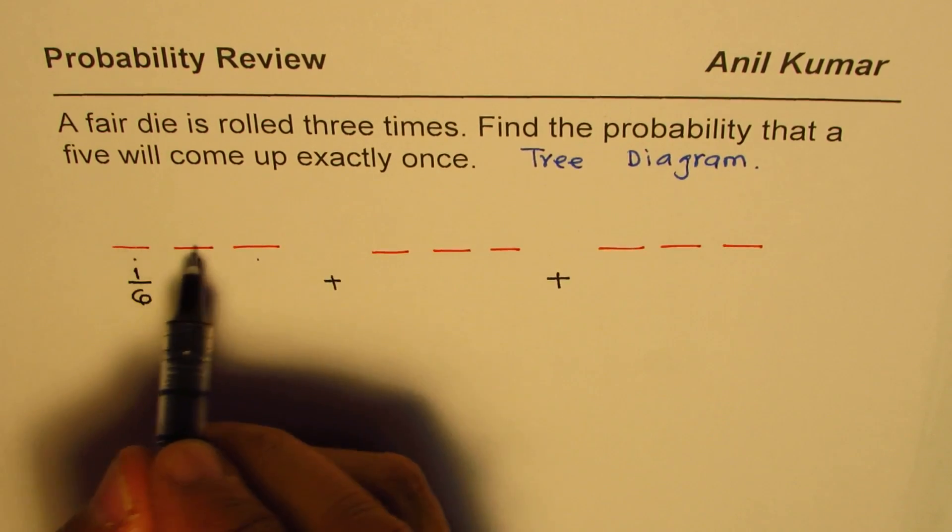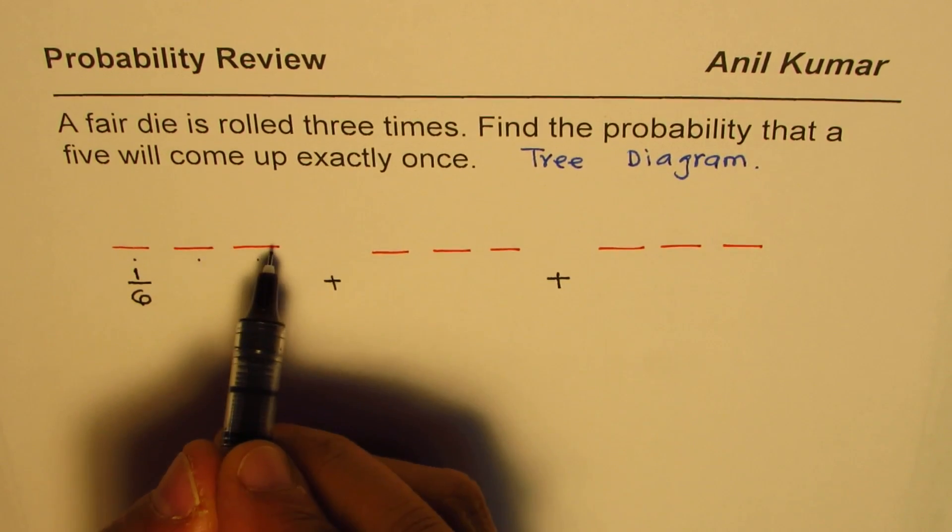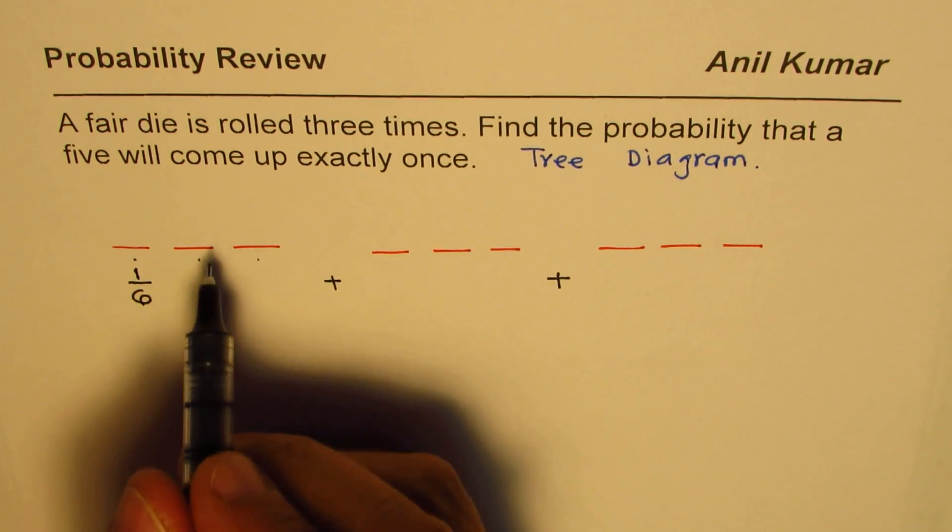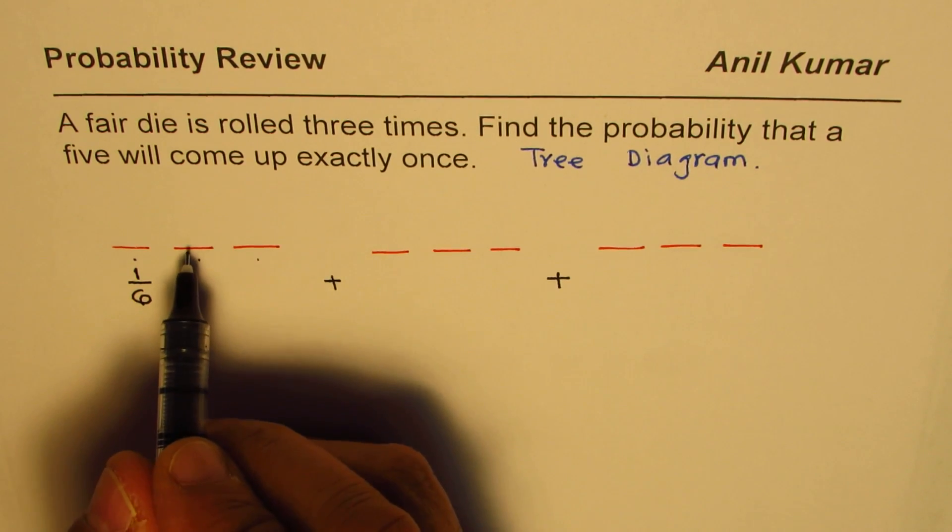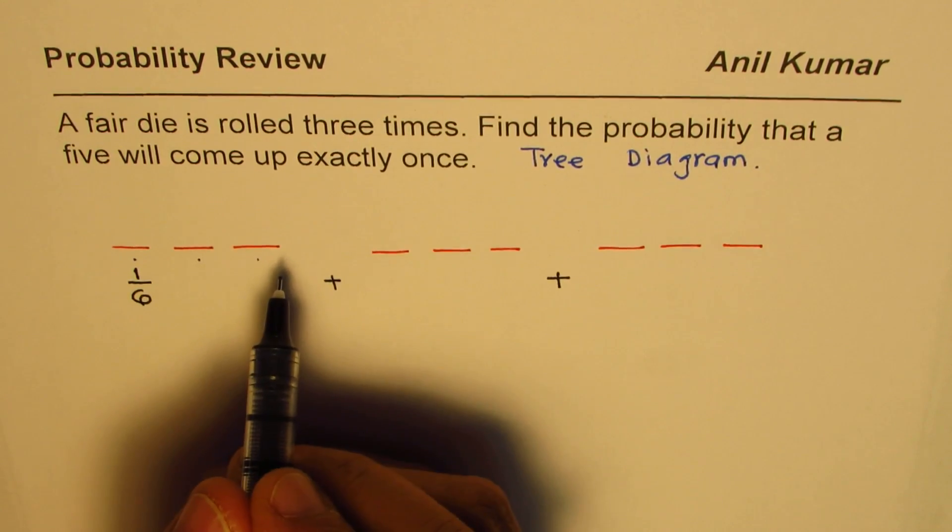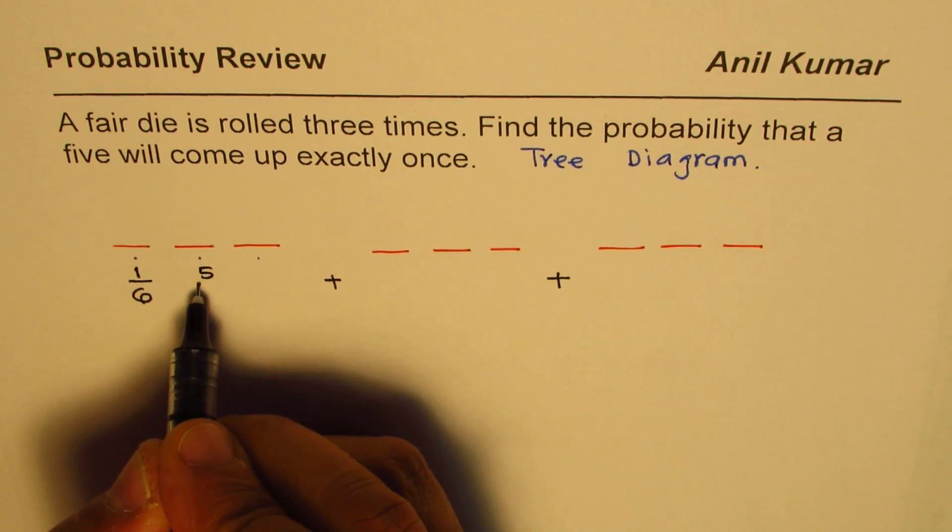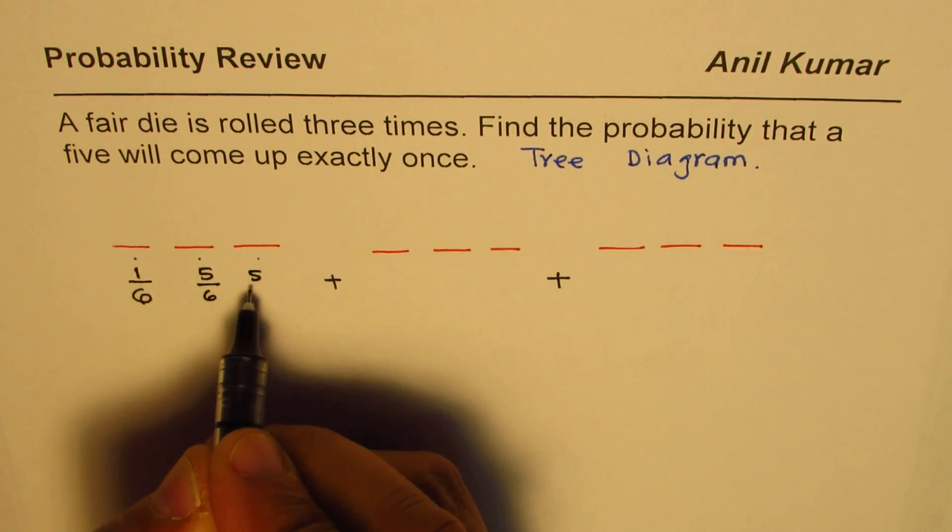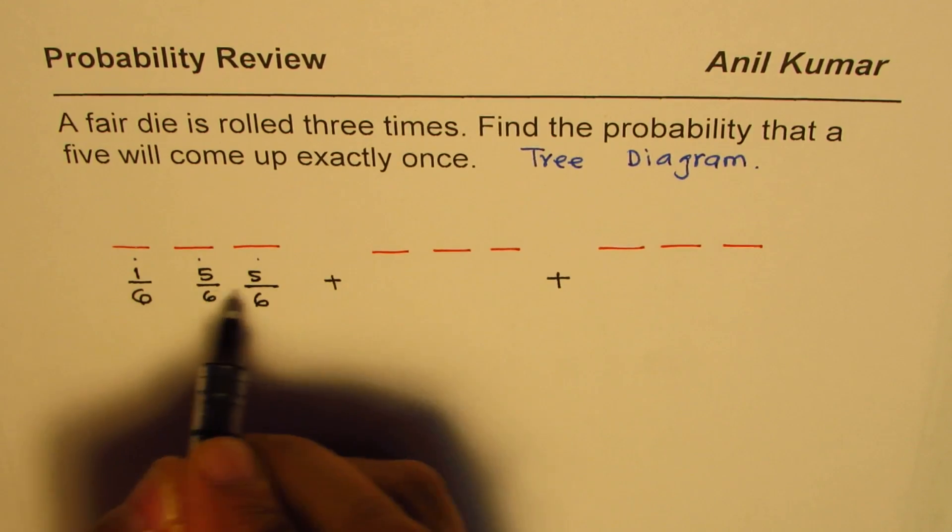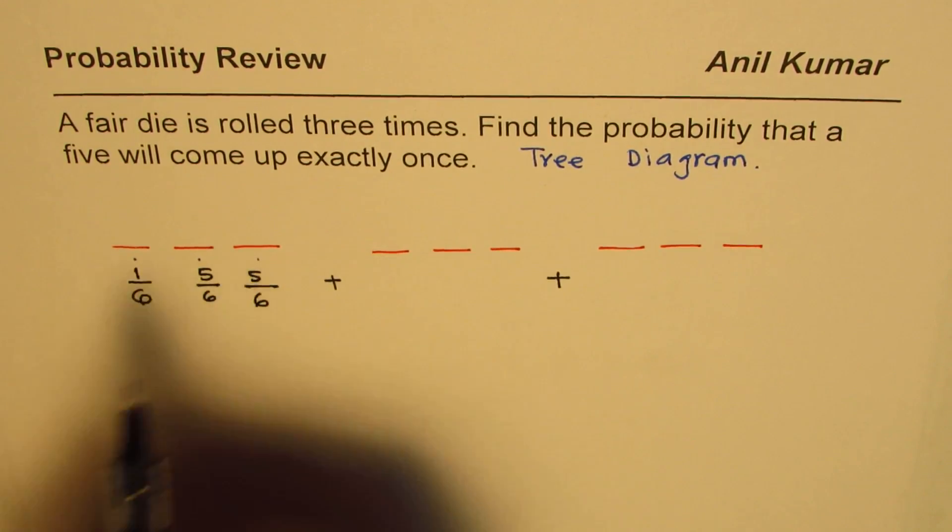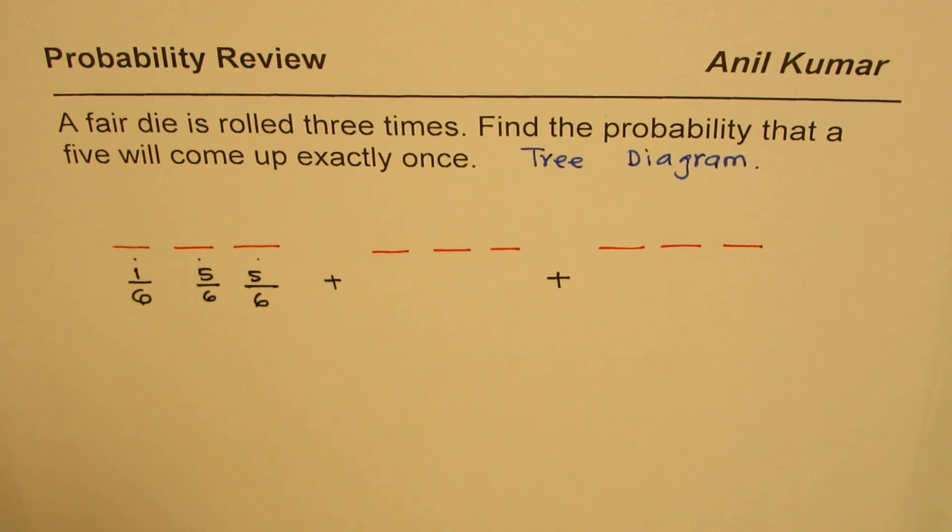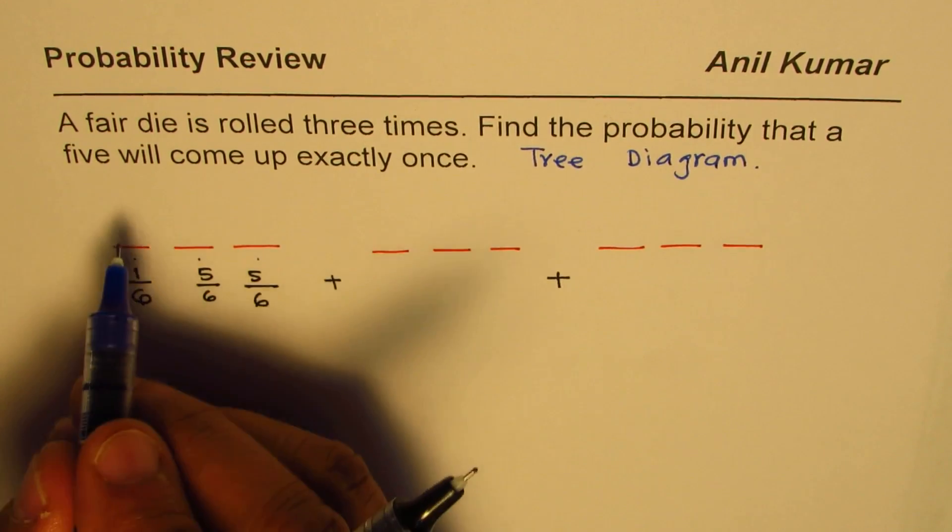If we get five here, we want five in exactly one position, so these two positions are occupied by other numbers, that is two, three, four, or six. Other five numbers. So the probability of getting those numbers will be five out of six or five out of six. From counting principles, probability of getting five in the first position...